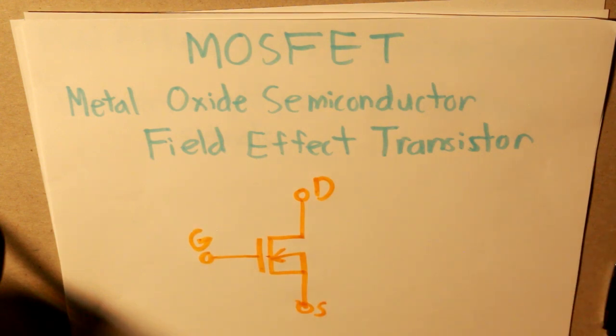So this is how it looks like, and it has basically three terminals: the drain, the source, and the gate. Now that you know what it looks like, let's define what a MOSFET is.